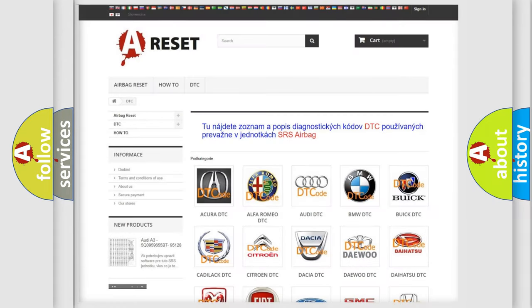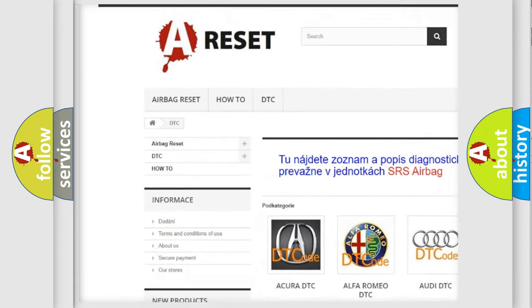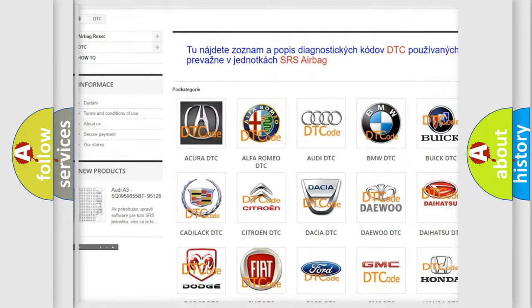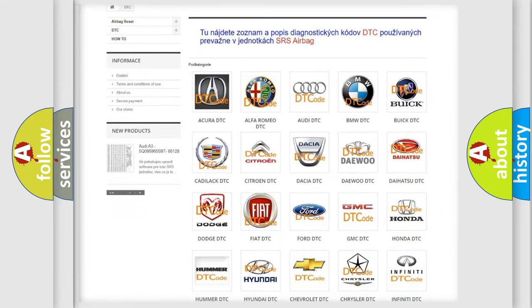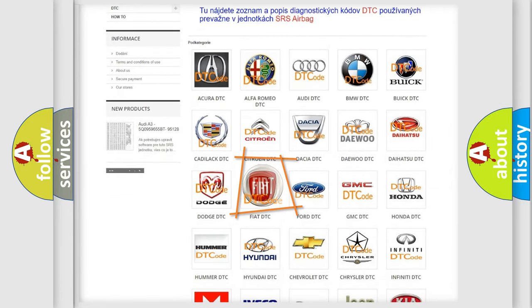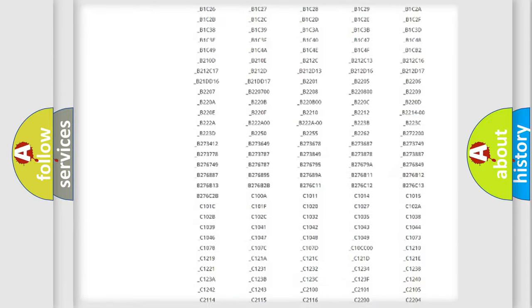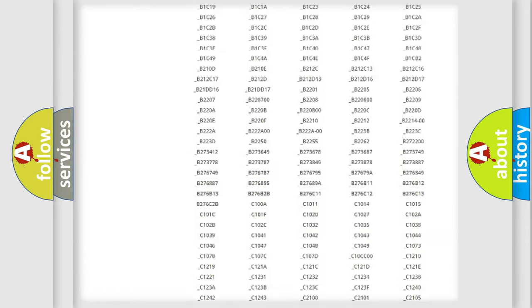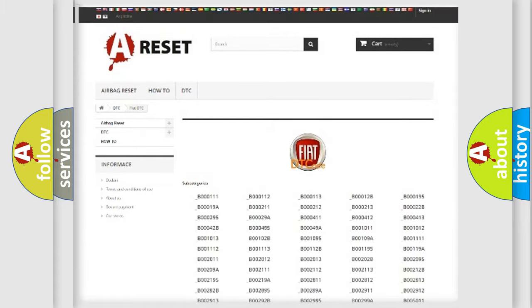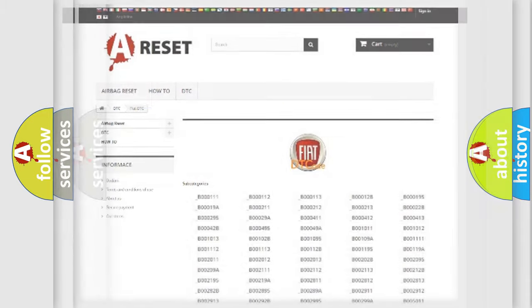Our website airbagreset.sk produces useful videos for you. You do not have to go through the OBD2 protocol anymore to know how to troubleshoot any car breakdown. You will find all the diagnostic codes that can be diagnosed in Fiat vehicles.